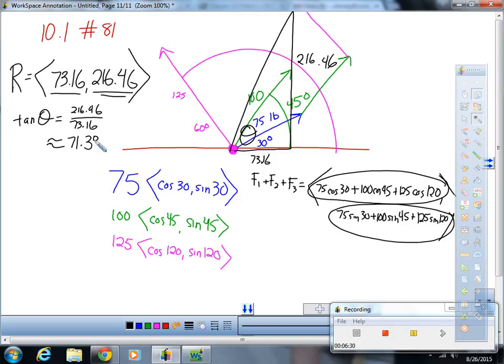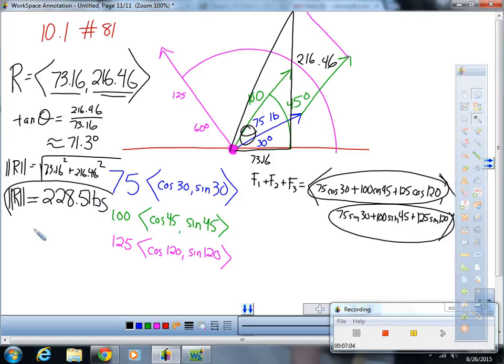And then, to find the magnitude of r, hopefully we're getting good at this, it's just the square root of 73.16 squared plus 216.46 squared. And so, the magnitude of r, again, that's going to be in pounds for this question. I calculated it to be about 228.5 pounds. And that is the answer to the question.